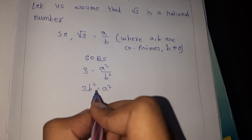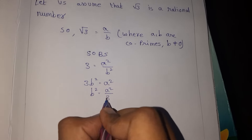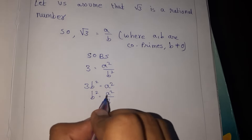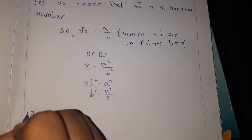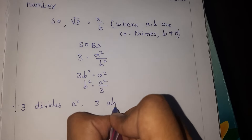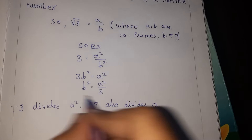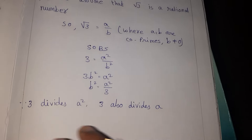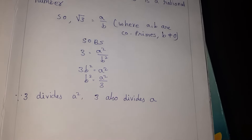We multiply both sides to get 3b² equals a². Therefore, 3 divides a², and since 3 divides a², 3 also divides a.